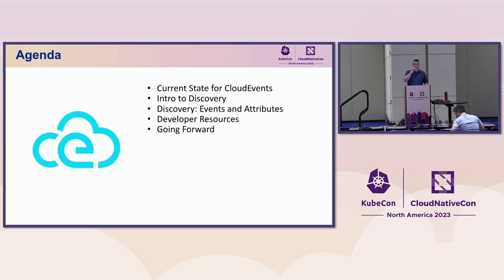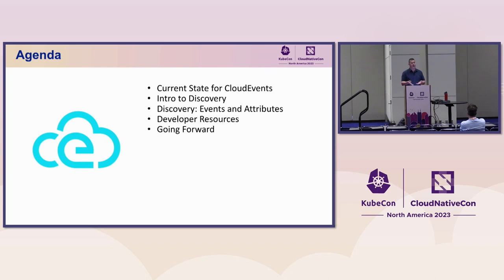From an agenda perspective, we're going to break it down into a couple of different segments: a little bit of background on the current state, where Cloud Events came from, where they're going. I'm also doing an introduction to discovery, which will branch out into events and attributes and where X Registry comes into place. Then a quick update on developer resources, because a huge amount of work has been done over the last year regarding updating the tooling necessary for developers to integrate Cloud Events.